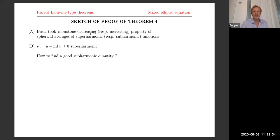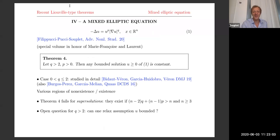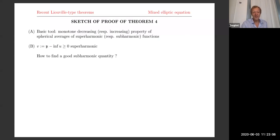In our case, the basic tool is using the monotone decreasing or increasing property of spherical averages of super-harmonic or sub-harmonic functions. We want to combine super-harmonicity and sub-harmonicity to force the solution to be constant. U is super-harmonic, of course, because it satisfies this equation. More precisely, we consider U minus its infimum — since we're talking about bounded solutions on the whole space — which is a non-negative super-harmonic function.